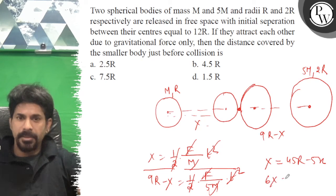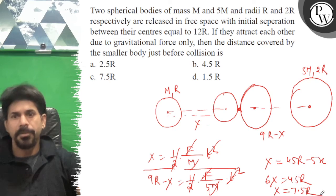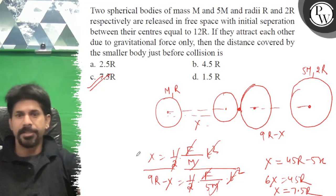So 6x equals 45R, therefore x equals 7.5R. The right answer is 7.5R, option C is correct. All the best.